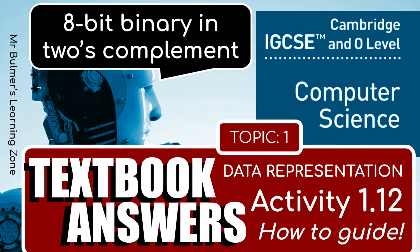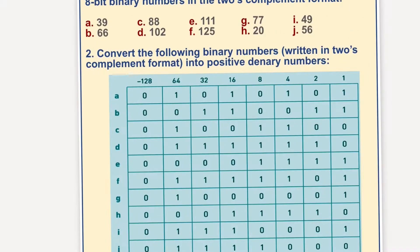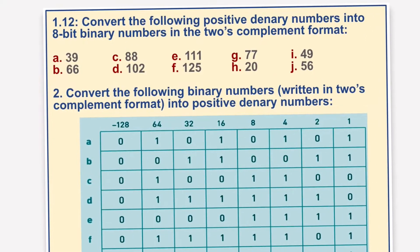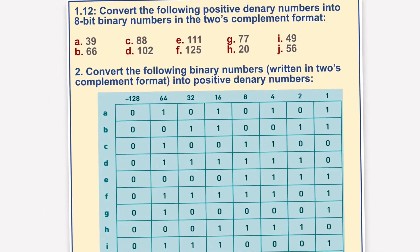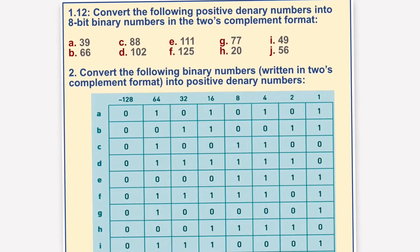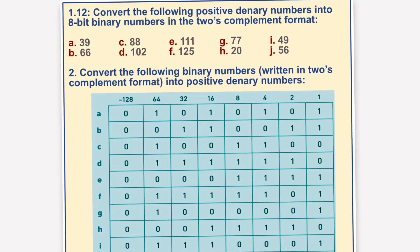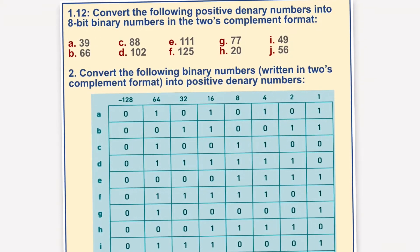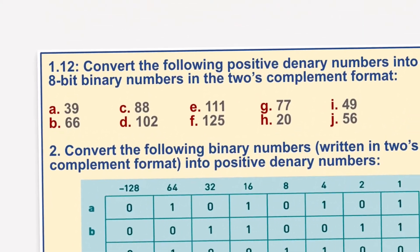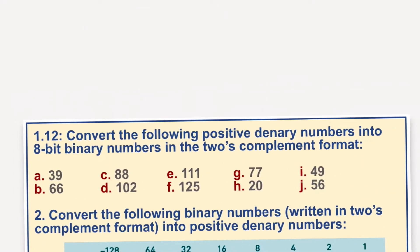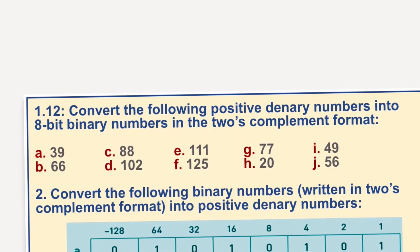Welcome back everybody. We're doing 1.12, converting the following positive denary numbers into 8-bit binary numbers in the 2's complement format. And we're going to be converting the following part 2 - convert the following binary numbers written in 2's complement format into positive denary numbers. None of these are actually going to give us a negative number, and that's what 2's complement is all about. So we'll start with part 1, and we'll take a couple of these numbers, starting with A.